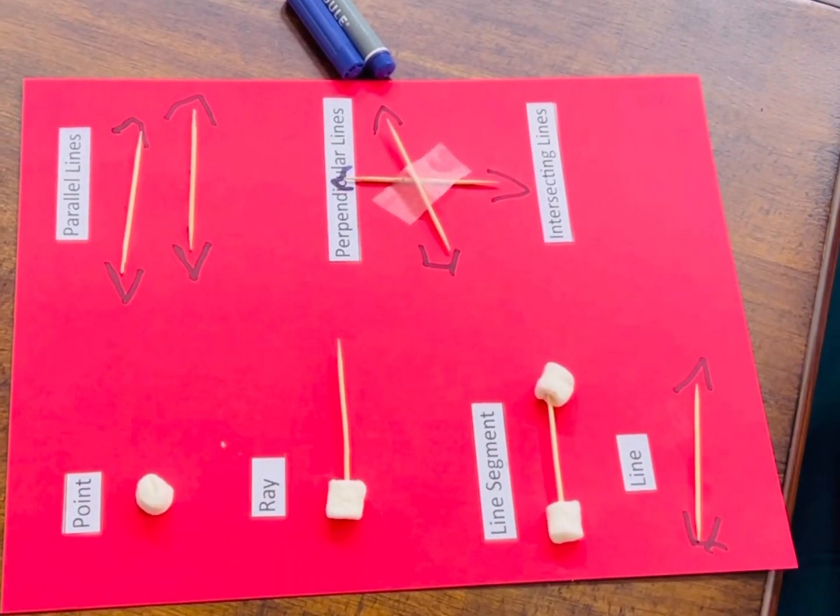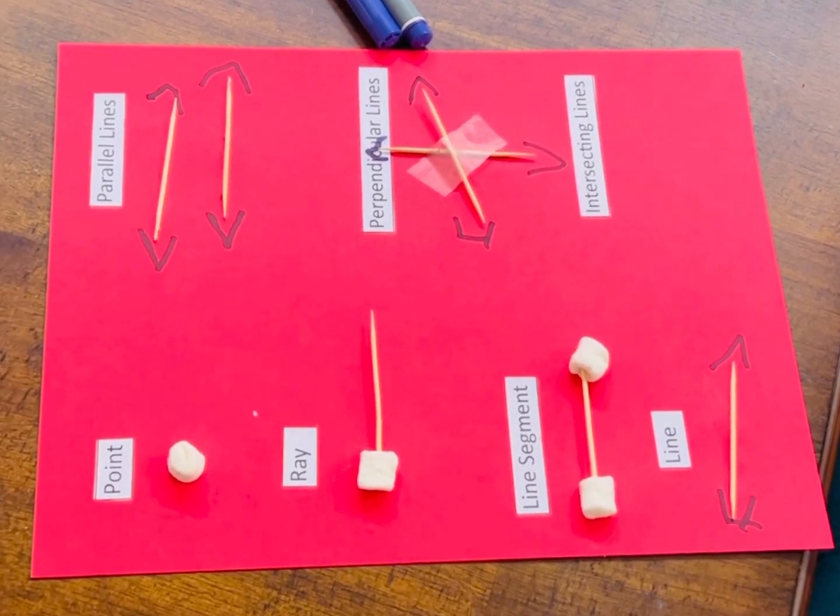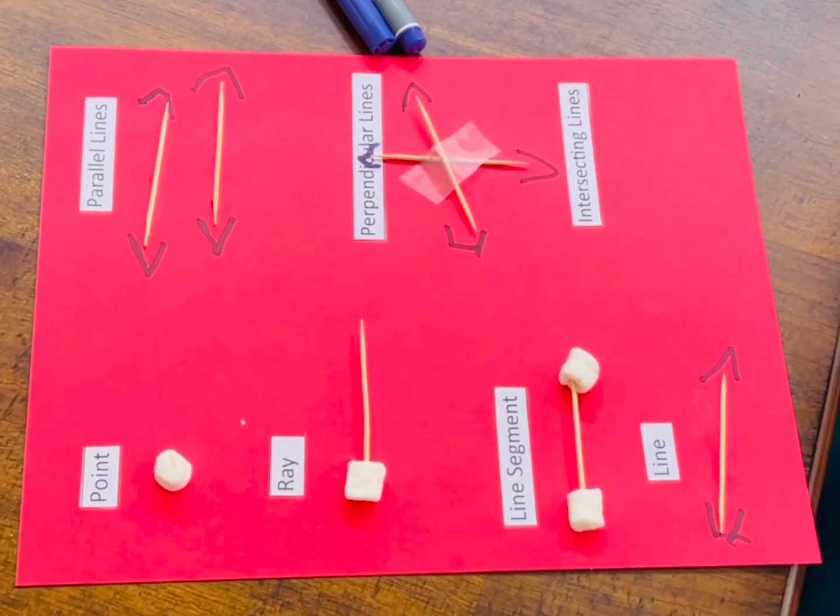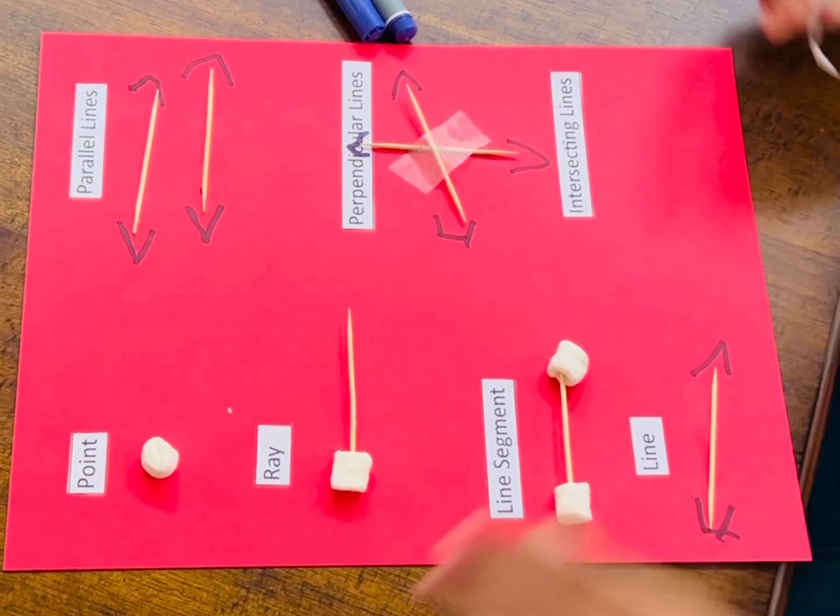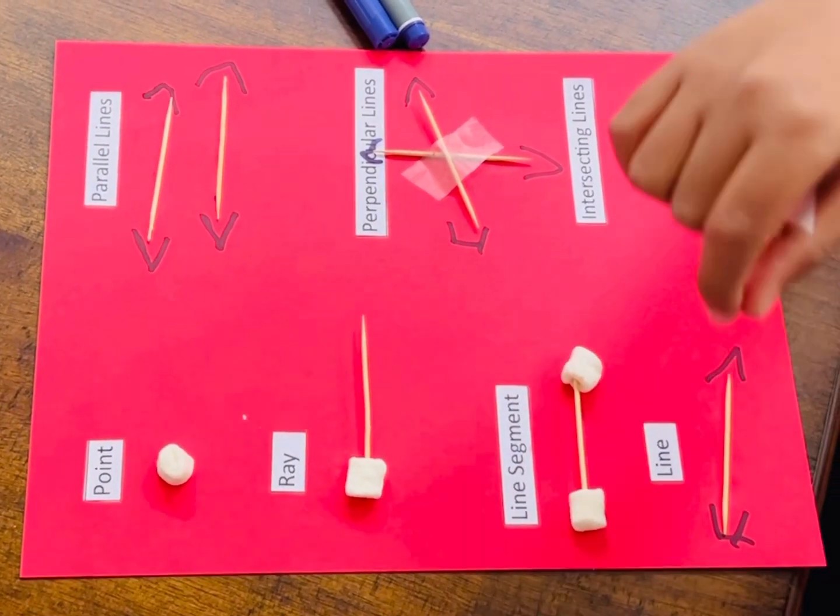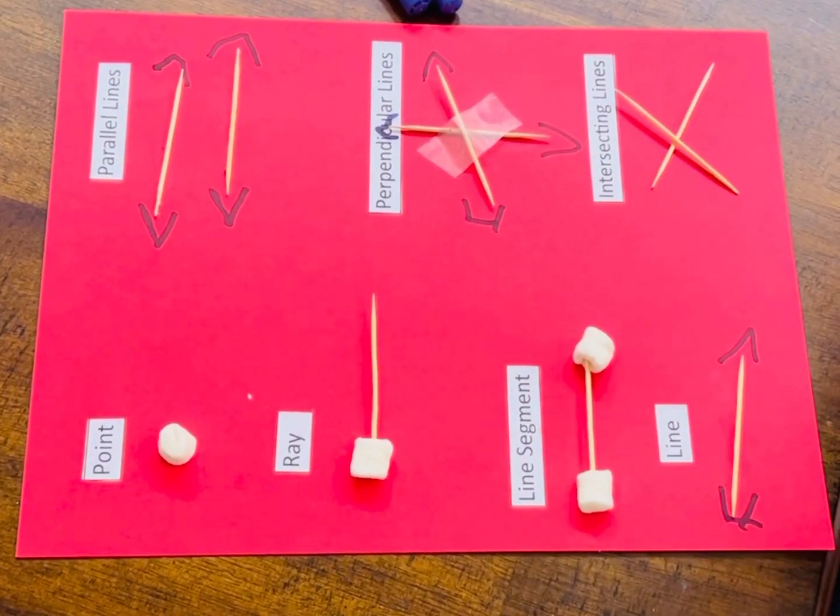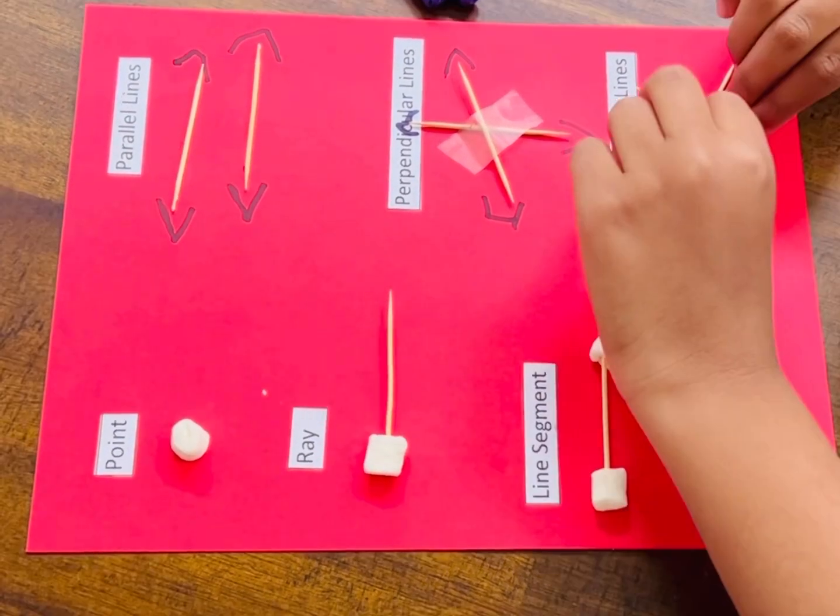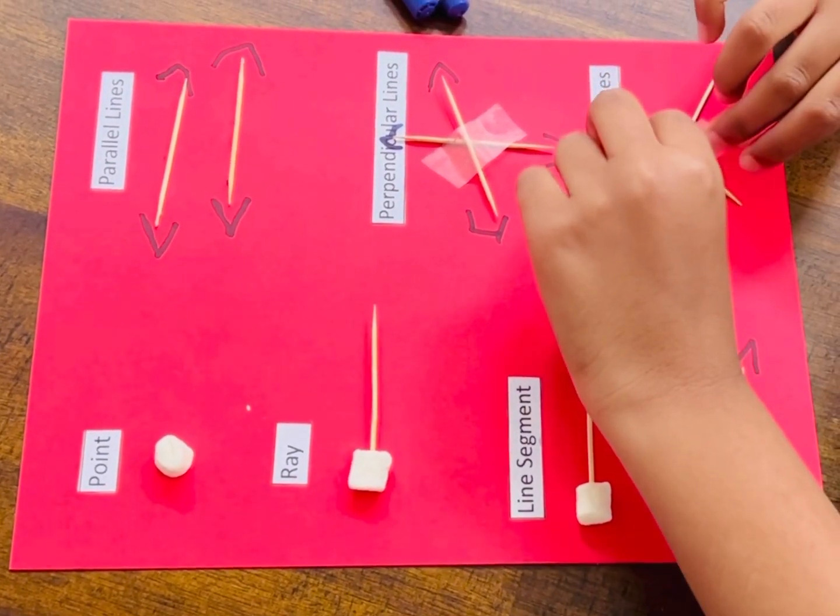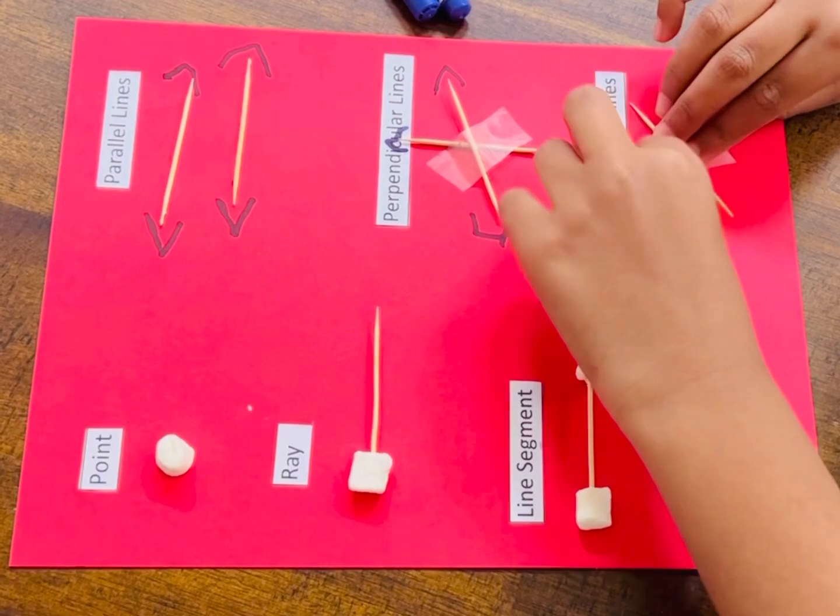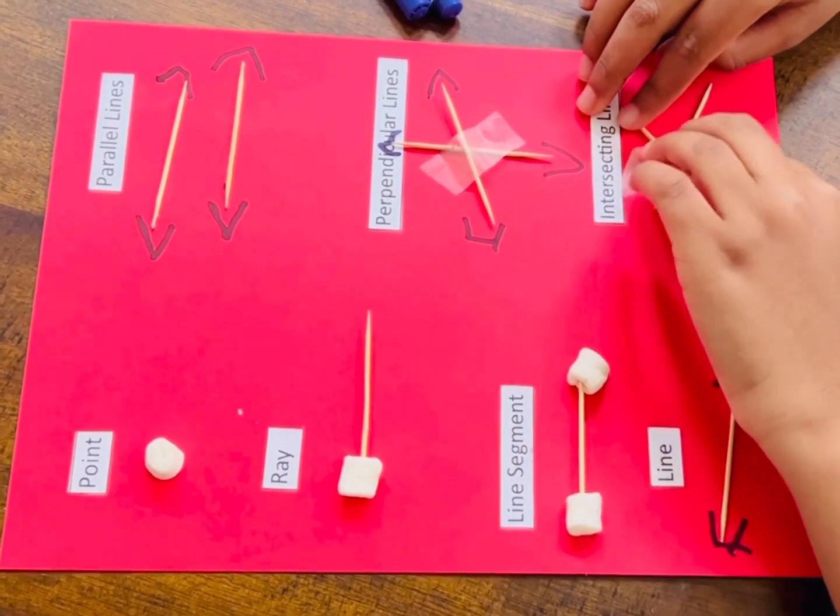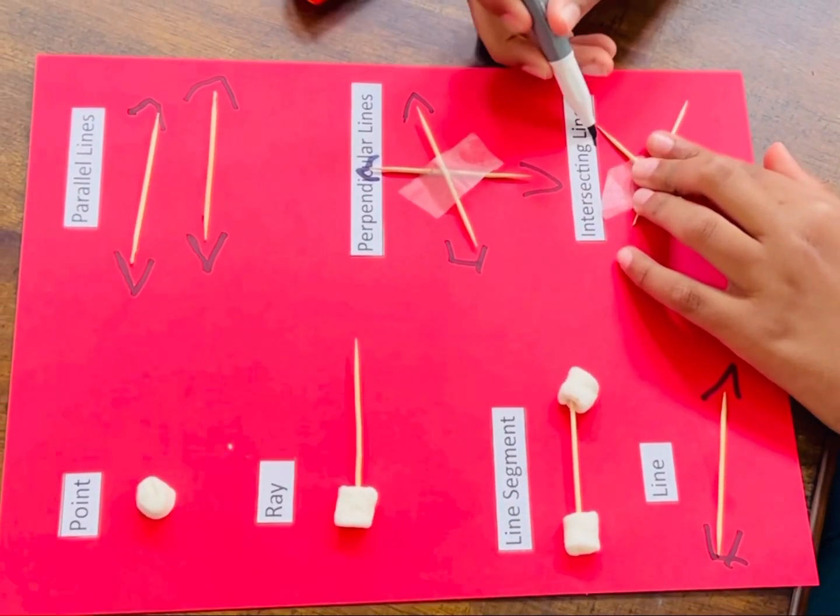Next, we're going to be talking about intersecting lines. So intersecting lines are going to be like this. They also touch, and they make a multiplication symbol. They also never end, and they touch at one point.